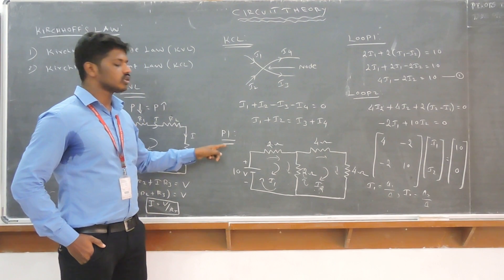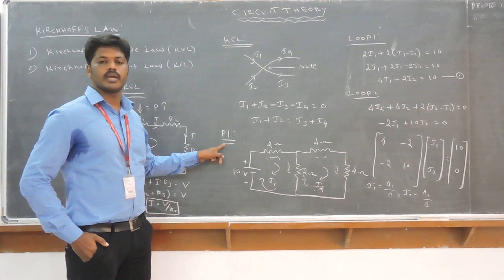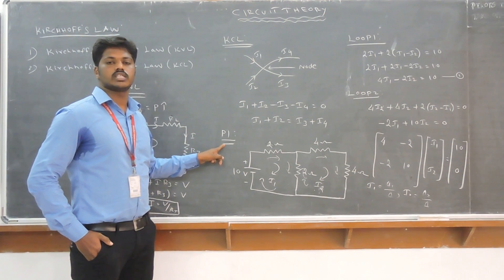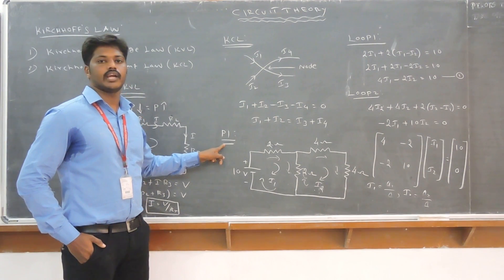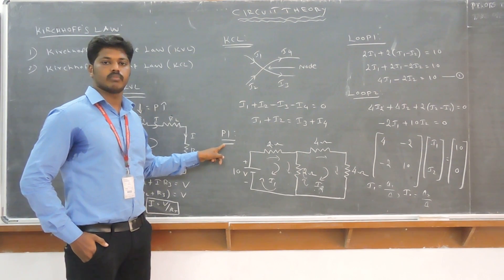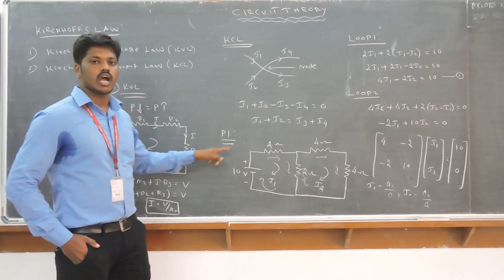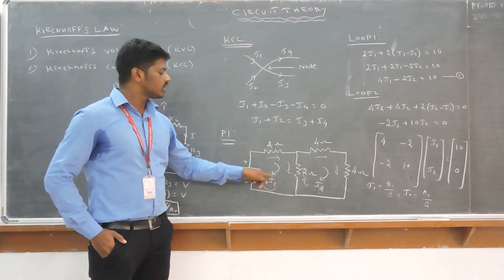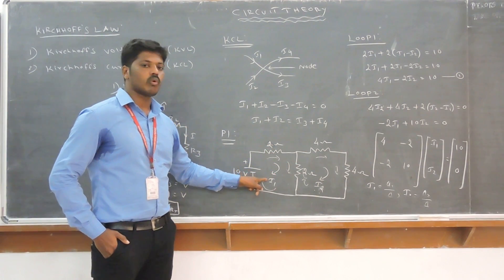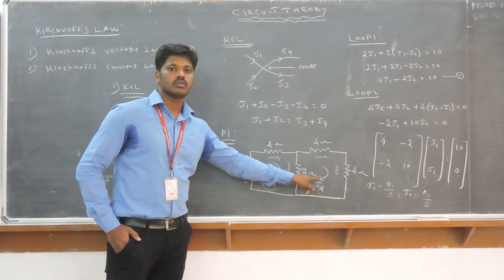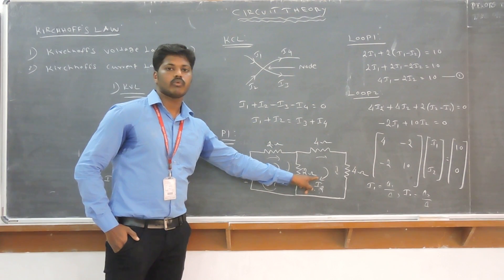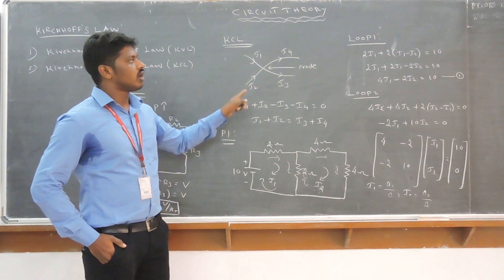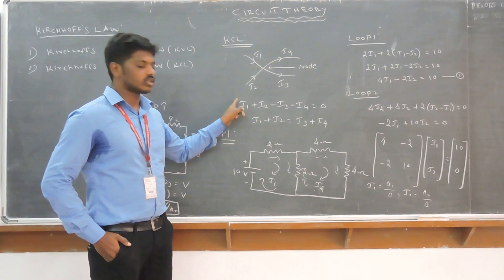Next, we want to look at a problem based on Kirchhoff's Voltage Law. By using KVL, we can find the currents I1 and I2 — the loop currents. First step: apply loop current I1 and loop current I2. Then, consider loop 1 and apply Kirchhoff's Voltage Law.